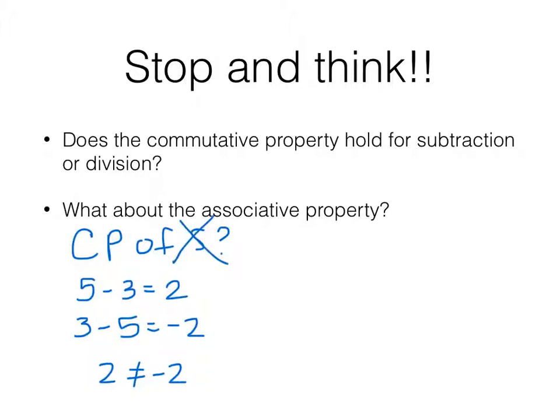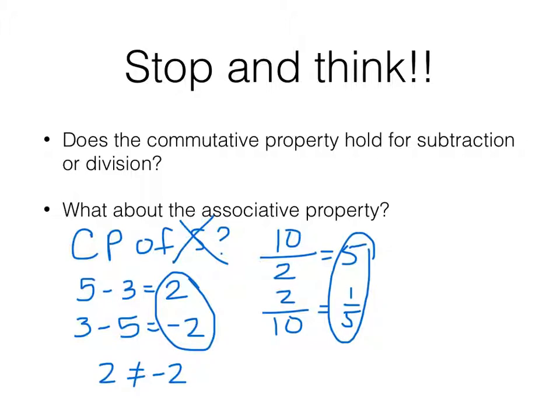What about the associative property of subtraction? We'll come back to that in a minute. How about the commutative property of division? 10 divided by 2 is 5. 2 divided by 10 is 1 fifth. So we should notice something. 2 and negative 2 have something specific about them. They're opposites. 5 and 1 fifth have something specific about them. They are multiplicative inverses or reciprocals. But we notice that, no, we can't have a commutative property of subtraction and we can't have a commutative property of division.